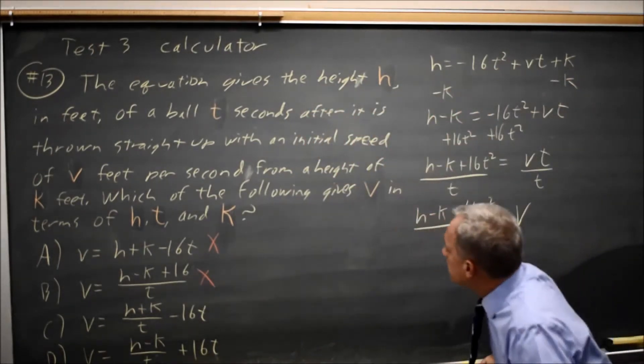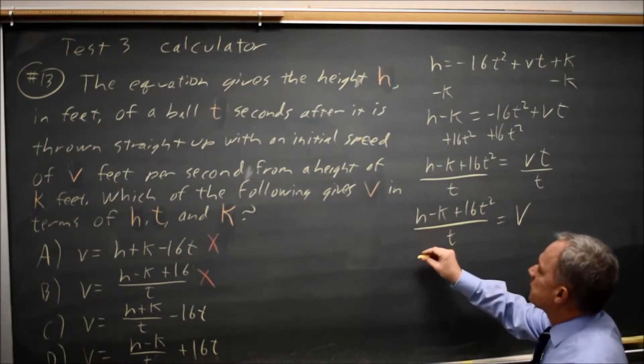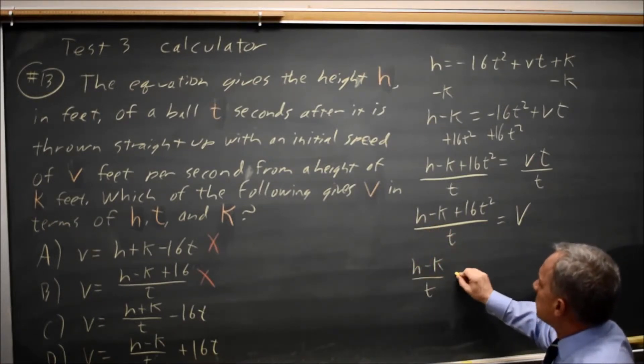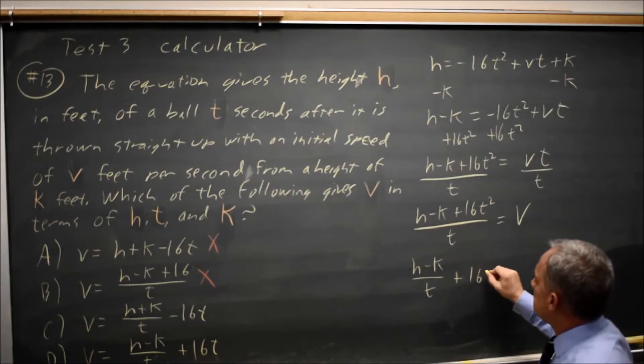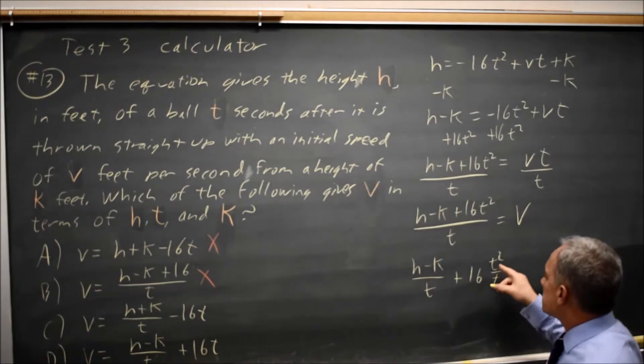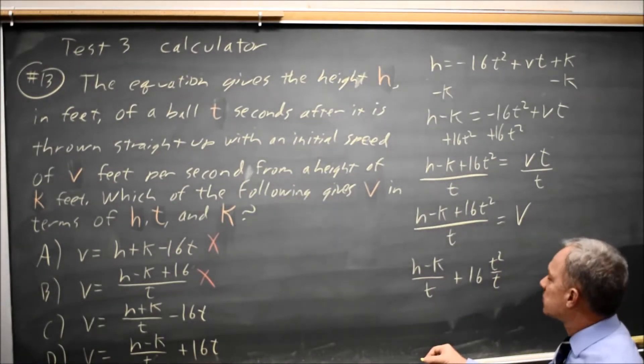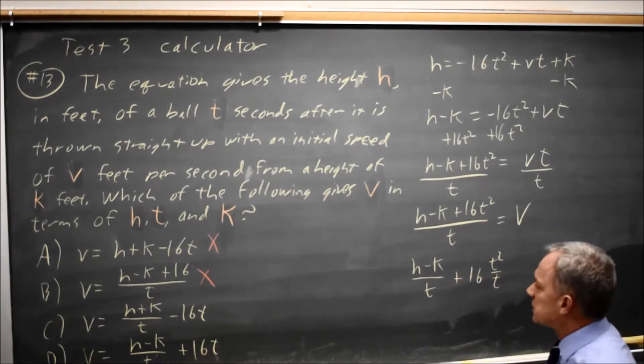I can separate the numerator to get h minus k over t plus 16 times t squared over t. 16 times t squared over t simplifies to the 16t we have in our answer choices and this is a plus.